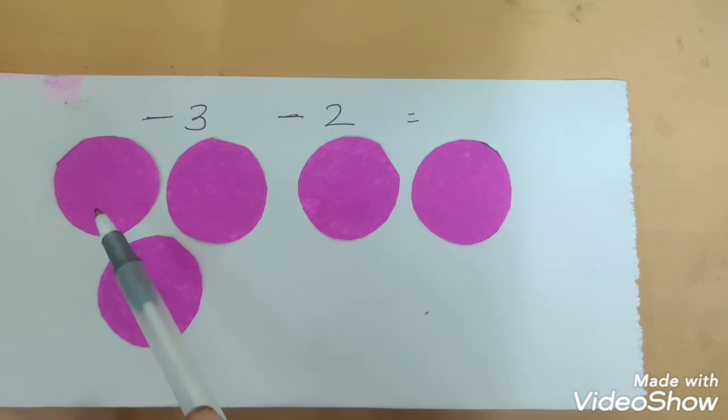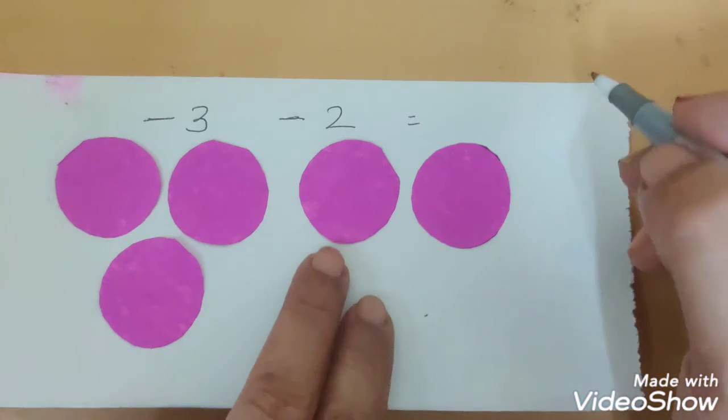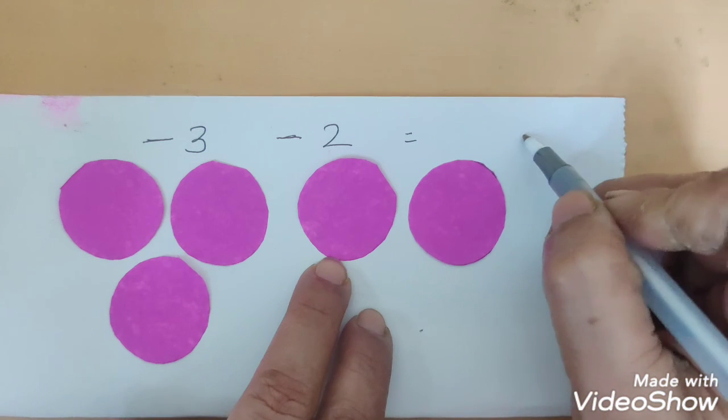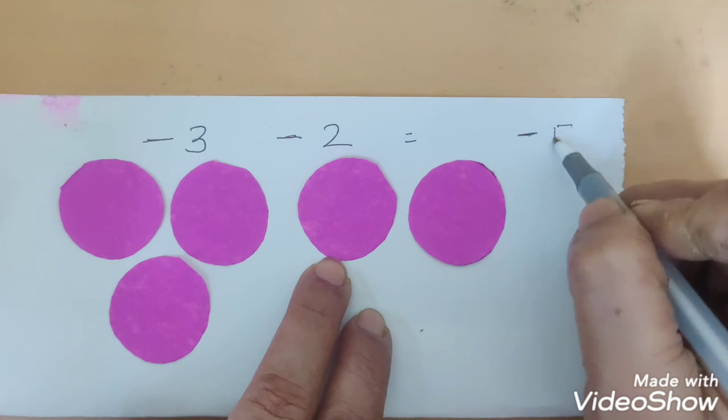So, all together it is 1, 2, 3, 4, 5 which means there are 5 pink circles and we associate that to be minus 5.